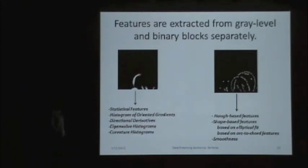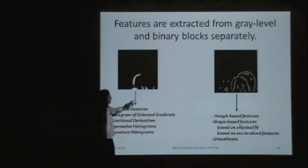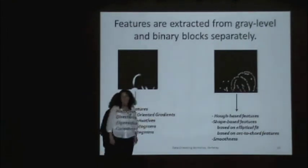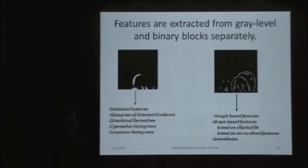After that, we have gray-level blocks and binary blocks, and from each one, we are extracting features. We are extracting statistical features like brightness and contrast, and we have histograms of oriented gradients, directional derivative, rotation-invariant histograms, and curvature histograms. From the binary version, we are getting shape-based features like ellipses. We are fitting ellipses to the contours or fitting lines on the contours. Also, we are using arc-to-chord features.